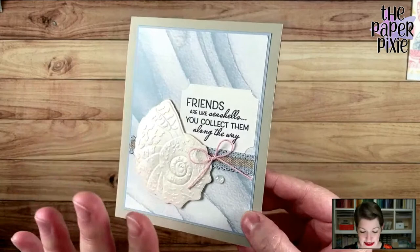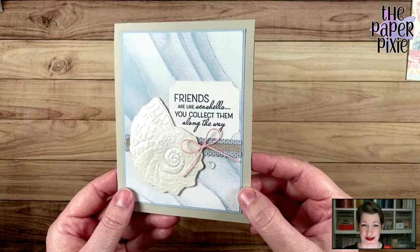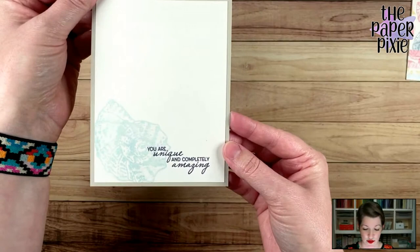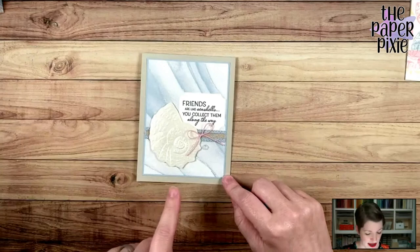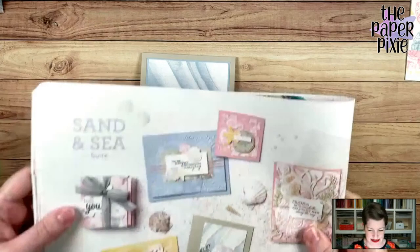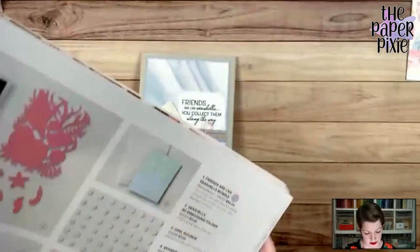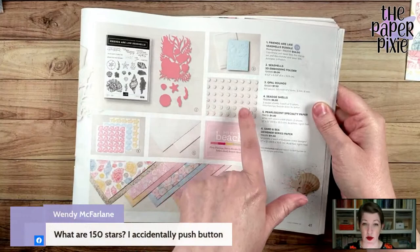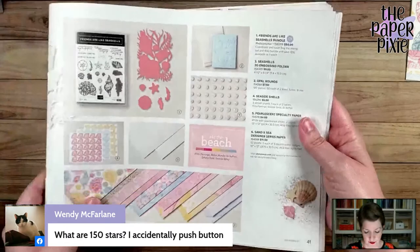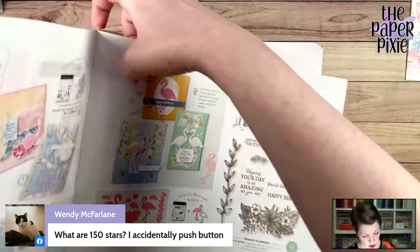Let's start with the card. I absolutely love this suite of products. I am dreaming of the beach like Nolan was last week. Friends are like seashells, you collect them along the way. And I almost never do this with my cards, but I decided to stamp the inside and it says you are unique and completely amazing. This is using a lot of the products from the suite. You will find the sand and sea suite on page 40 of the mini catalog.